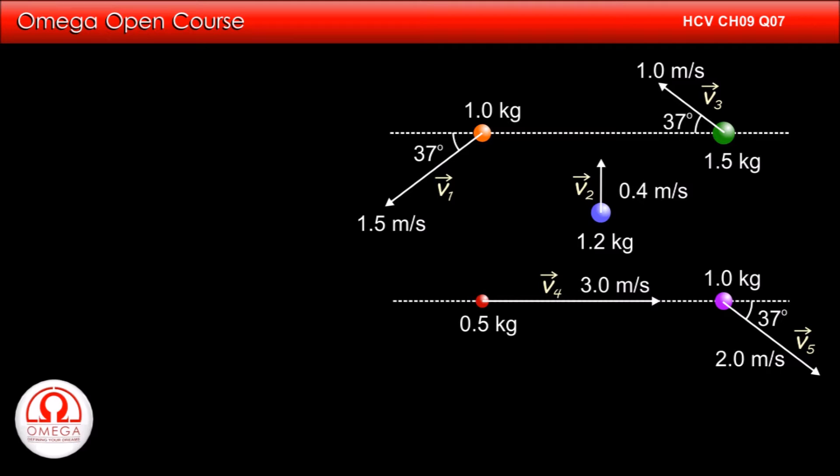If we take horizontal direction as x-axis with positive towards right and vertical direction as y-axis with positive upward, then vector v1 is minus 1.5 cos 37 degree i cap minus 1.5 sin 37 degree j cap. Putting the values of cos 37 degree and sin 37 degree, we get vector v1 equals minus 1.2 i cap minus 0.9 j cap.